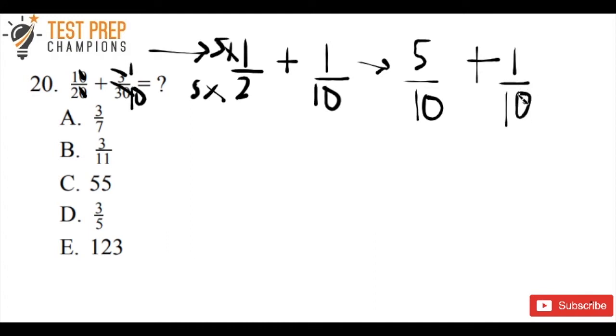And so now that we have a common denominator, we can add. So all we're going to do is we just add the numerator. 5 plus 1 is going to give us 6, and we just keep the denominator as 10. So a mistake would be to do 10 plus 10. You don't do that, you just keep it as the same number and add the numerator.